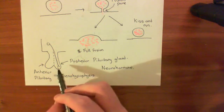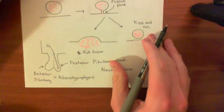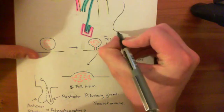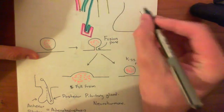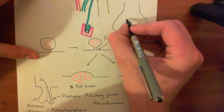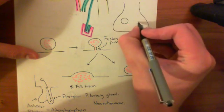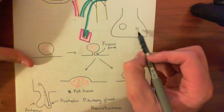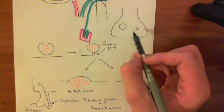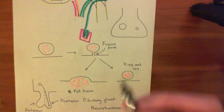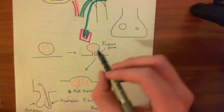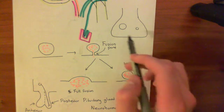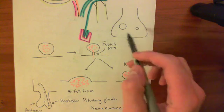Inside these posterior pituitary axon terminals there are two types of synaptic vesicle: very big ones and very small ones. The big ones are full of peptides, and the small ones are full of small molecule neurotransmitters. And basically, we can actually measure the size of the fusion pores that you get from each of these synaptic vesicles.